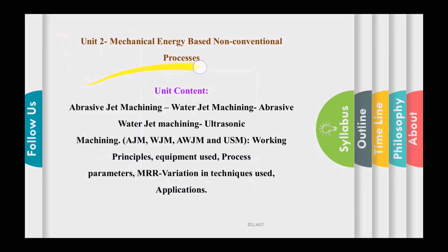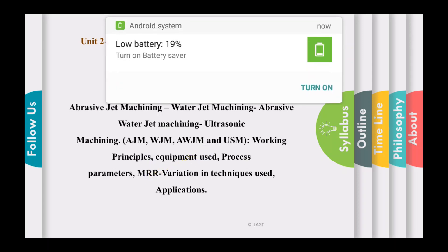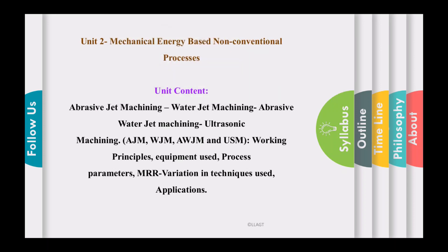In unit number two — mechanical energy based non-conventional machining processes — we are going to learn abrasive jet machining (AJM), water jet machining (WJM), abrasive water jet machining (AWJM), and ultrasonic machining (USM). For all these processes we will learn working principles, equipment used, process parameters, MRR variation, and most importantly the applications of these processes.